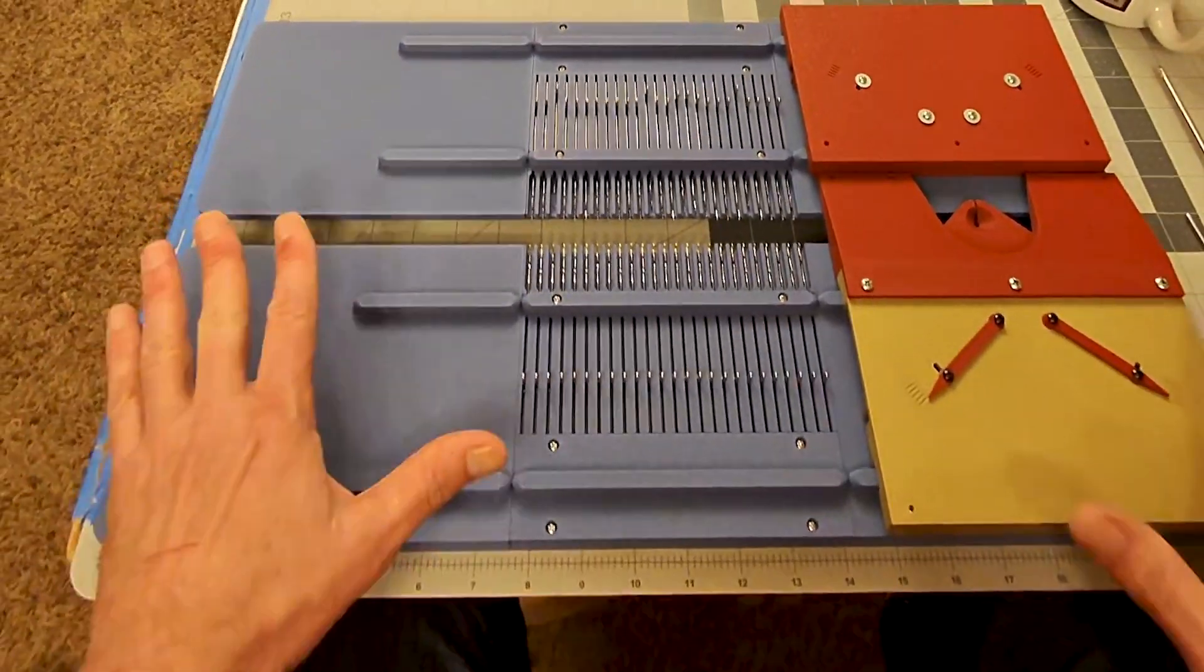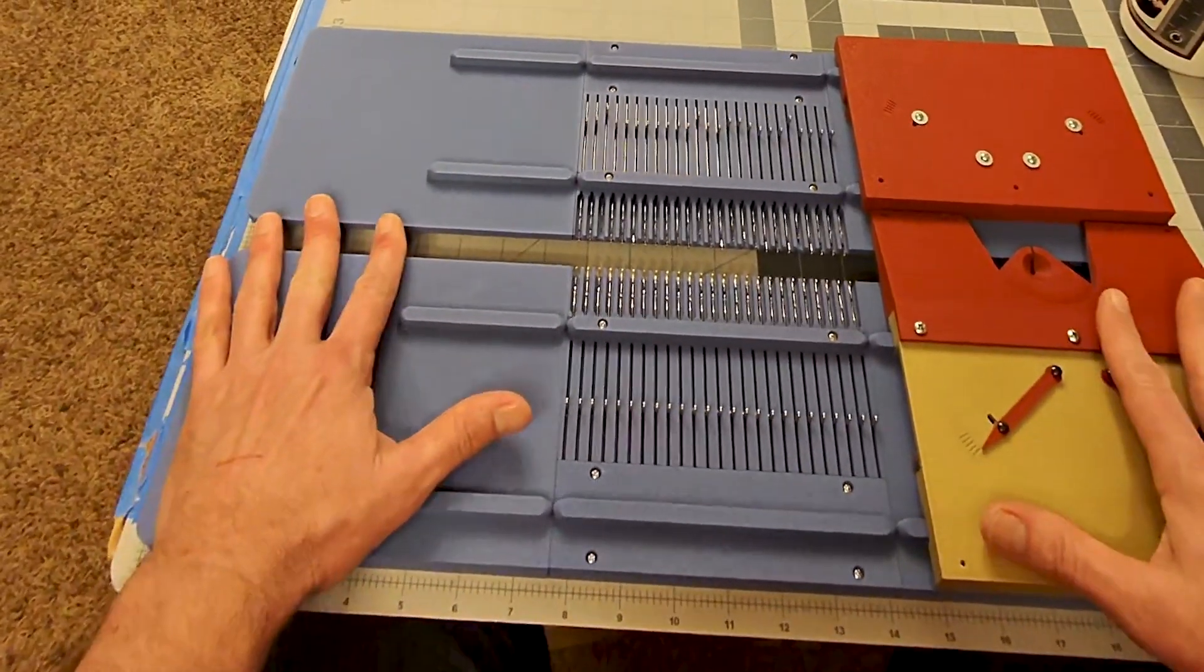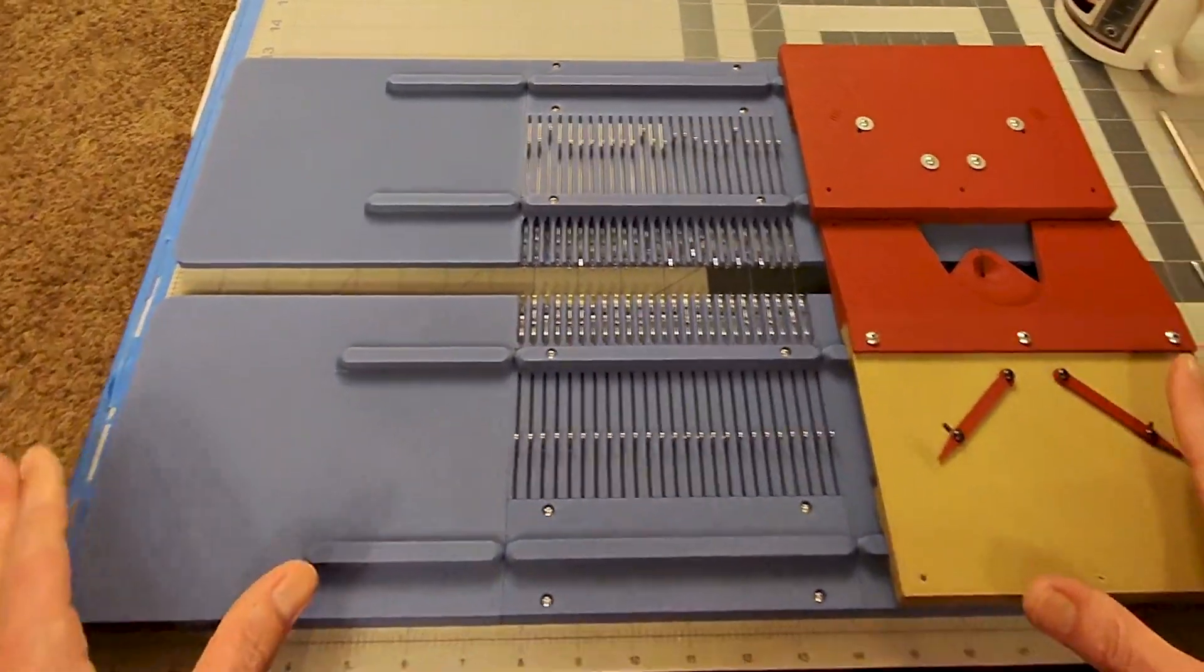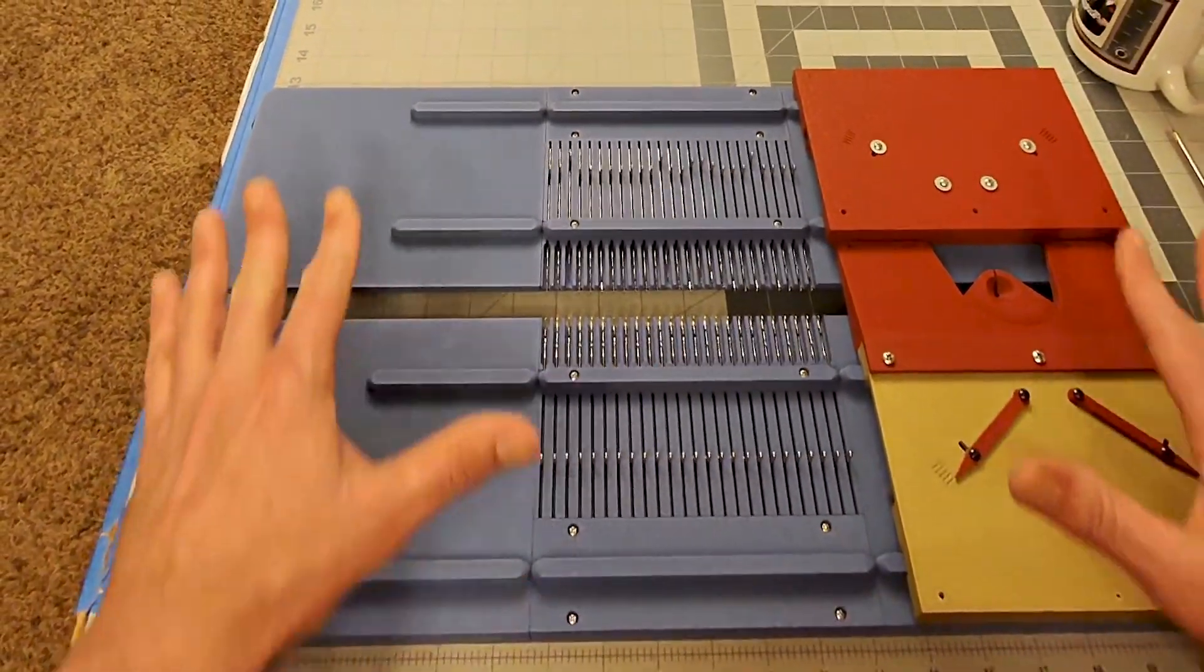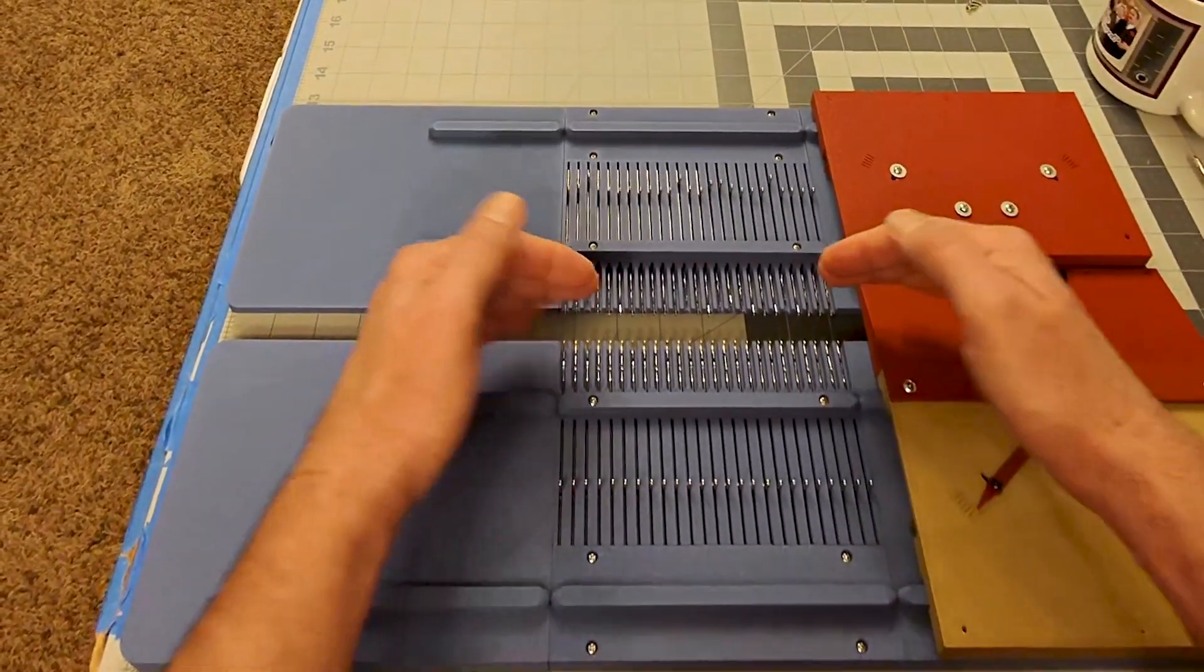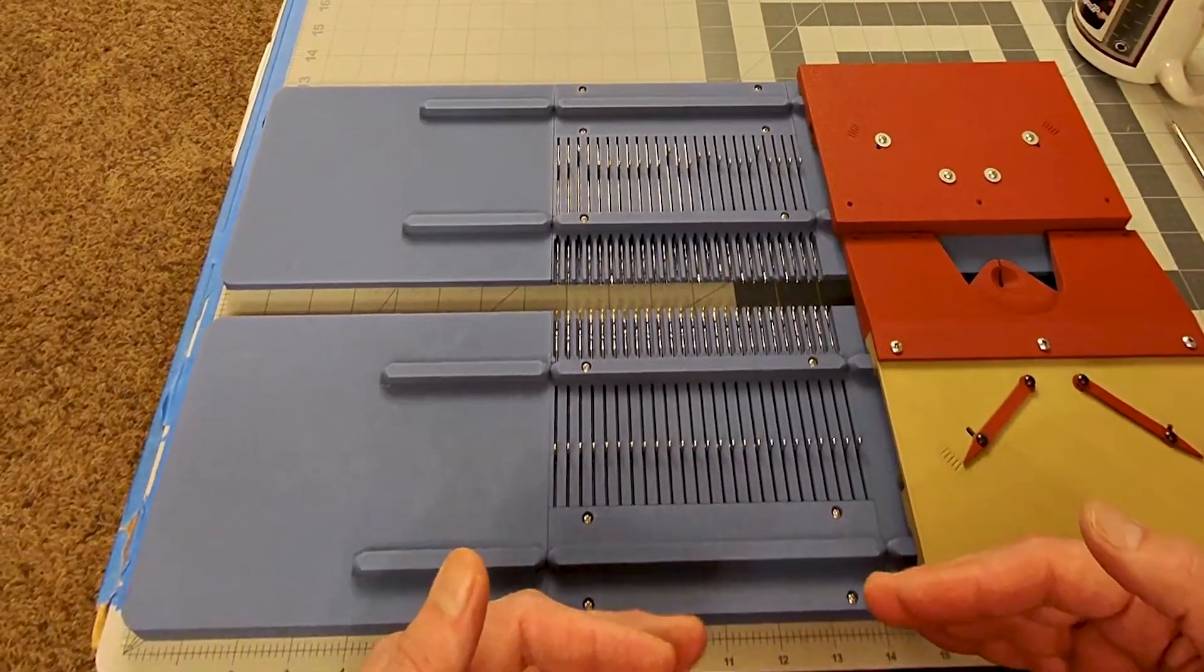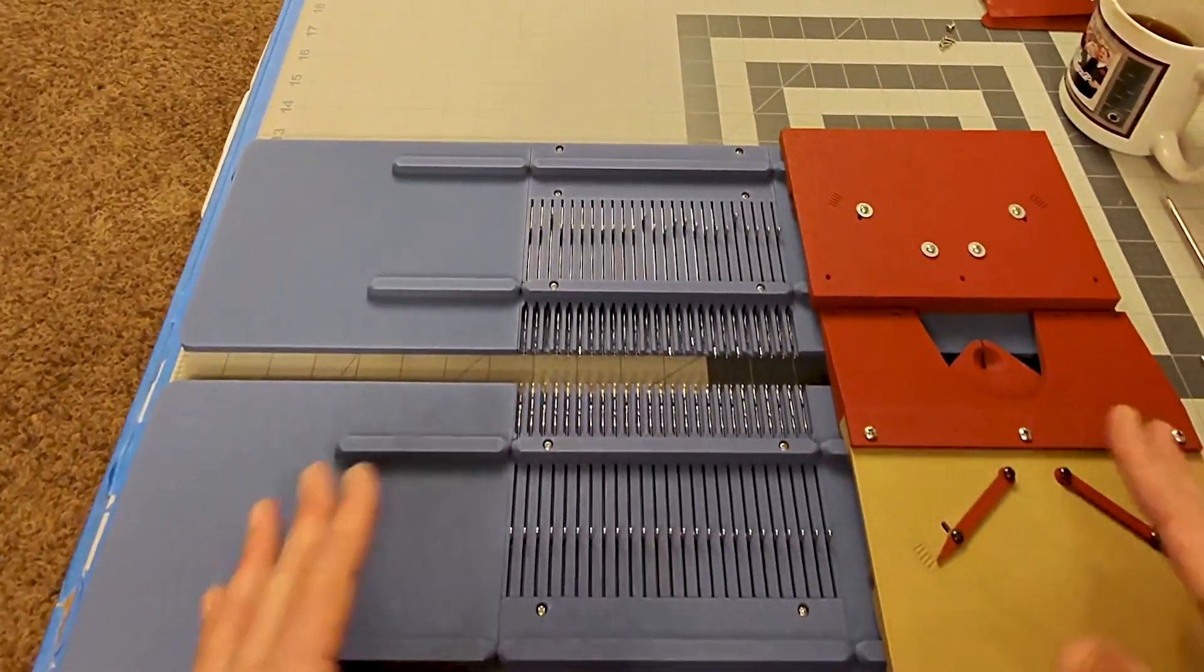Welcome back to the next video in this series. My long-term goal here is to have a two-bed knitting machine, meaning that we could do back stitches and front stitches.